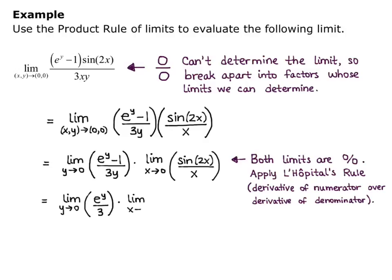Times the limit as x goes to 0, the derivative of sin(2x), we apply the chain rule, and we get 2cos(2x), and the derivative of the denominator is 1.